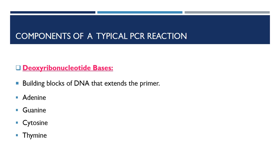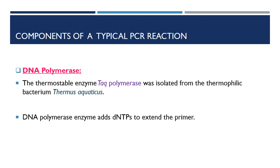DNA polymerase. Kary Mullis first performed PCR by using DNA polymerase isolated from E. coli, but high temperature denatured the enzyme. Then the thermostable enzyme Taq polymerase was isolated from the thermophilic bacterium Thermus aquaticus. Other enzymes such as Tth polymerase from Thermus thermophilus were subsequently exploited for laboratory use. DNA polymerase enzyme adds dNTPs to extend primers in the PCR reaction.